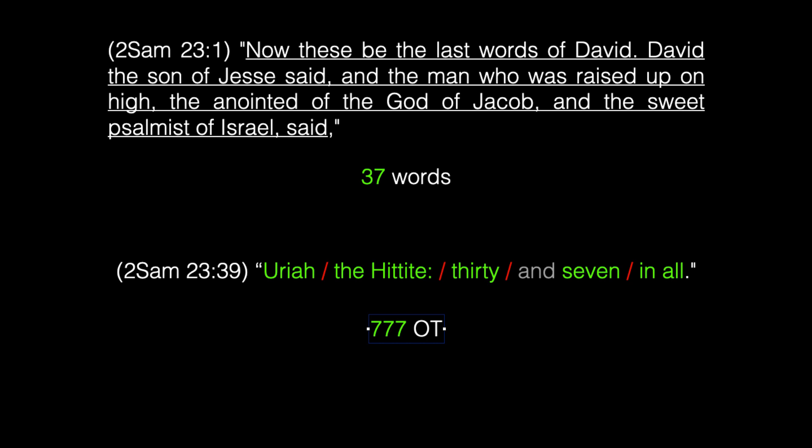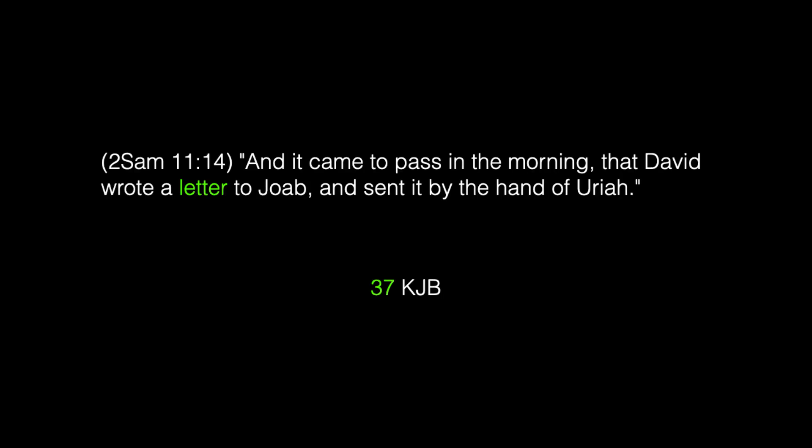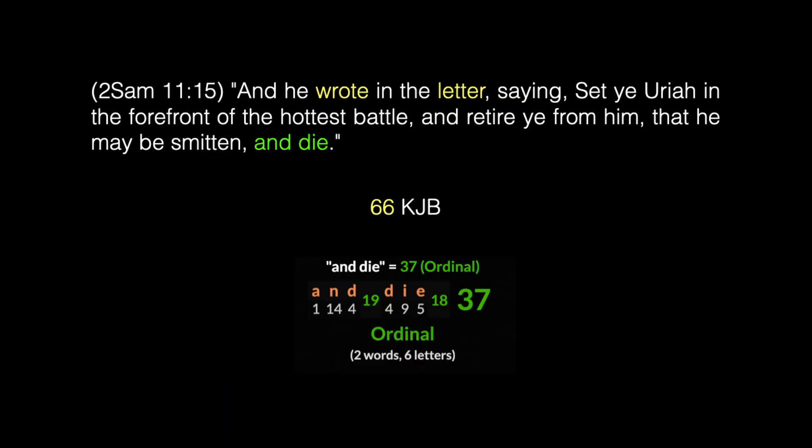Let's look at 2 Samuel 11:14: 'And it came to pass in the morning that David wrote a letter to Joab and sent it by the hand of Uriah.' There it is — 'letter' occurs 37 times in the King James Bible, and this is the first occurrence. Uriah the Hittite is the 37th man listed of the mighty men of David. Verse 15: 'And he wrote in the letter saying, Set ye Uriah in the forefront of the hottest battle and retire ye from him that he may be smitten and die.' The word 'wrote' and 'letter' combined appear 66 times in the King James Bible — there are 66 books in the Bible. The phrase 'and die' has a value of 37.